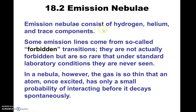Emission nebulae tend to consist mostly of hydrogen and helium, and then a little bit of heavier things like dust. One of the things that we find — and this is a really bad name — are called forbidden transitions.